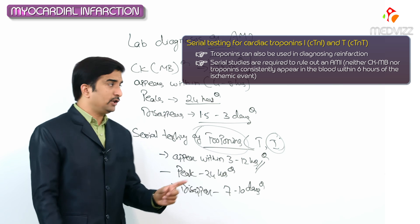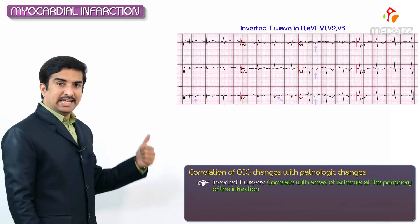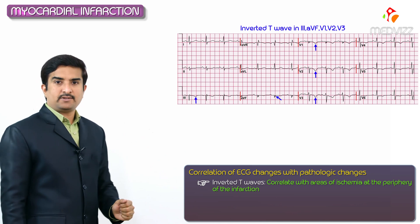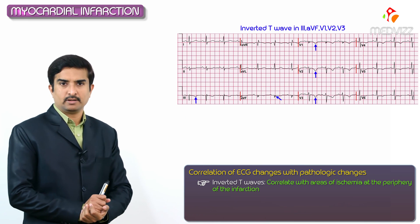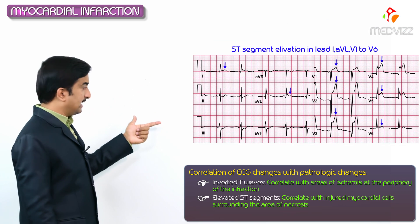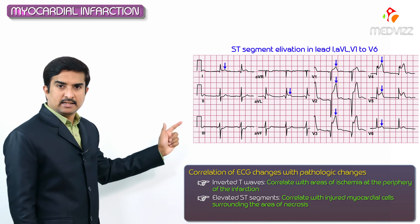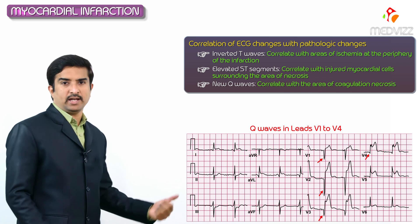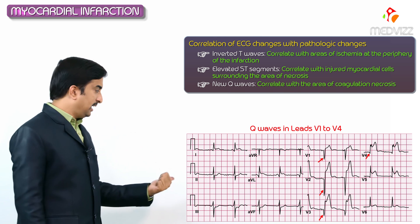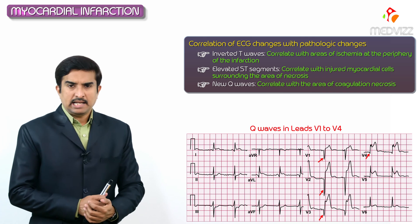Regarding correlation of ECG changes with pathological changes: inverted T waves correlate with the area of ischemia at the periphery of the infarction; elevated ST segments correlate with injured myocardial cells surrounding the area of necrosis; and new Q waves correlate with the area of coagulative necrosis.